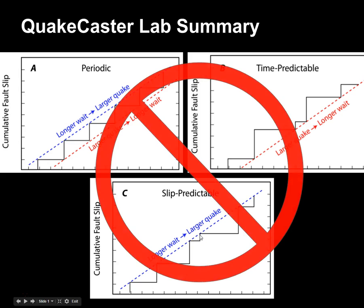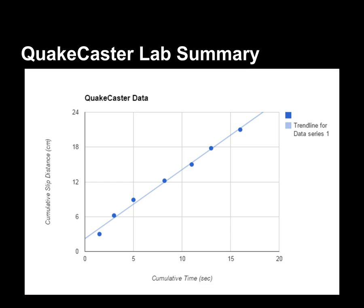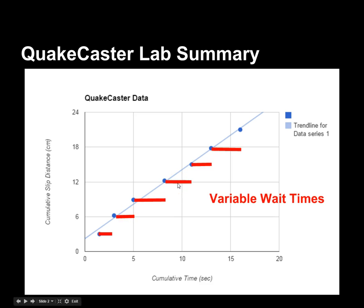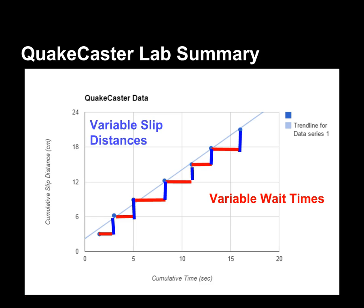Slip predictable means the longer you have to wait, the bigger the earthquake will be, and a short wait time means a small earthquake. What we found in the lab is none of those really apply. Our data really shows that wait times between earthquakes are variable — they change — and the slip distance, or how big the earthquake is, is variable as well. Our data points are not on a set line.